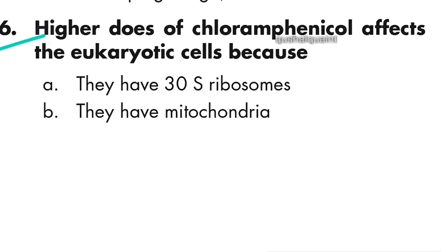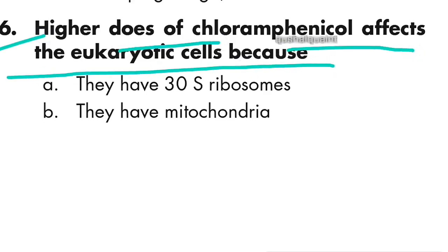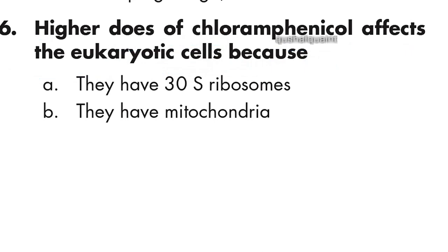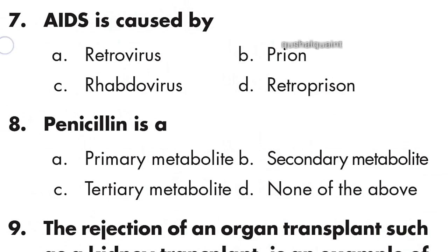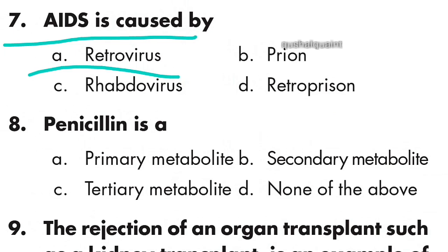Question 6: Higher doses of chloramphenicol affect eukaryotic cells because they have mitochondria. Option B is right. Question 7: AIDS is caused by retrovirus. Option A is right.